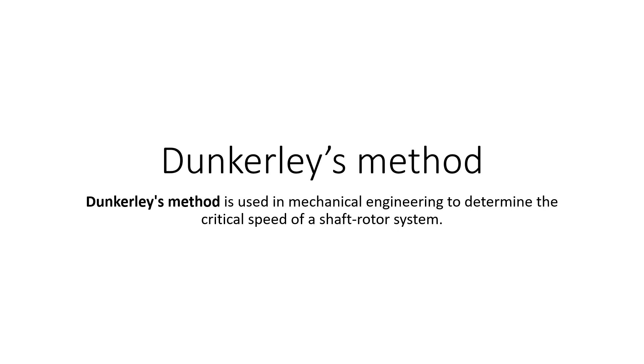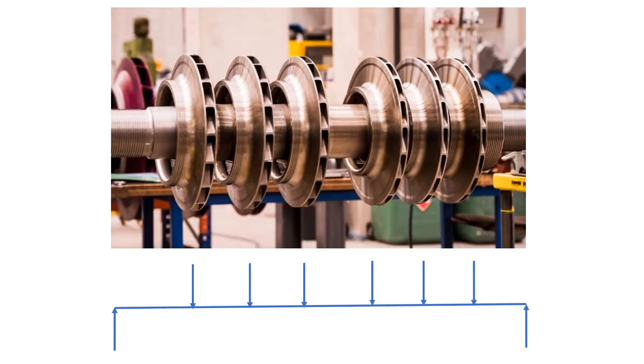In the last video, we discussed the meaning of critical speed. In today's video, we will discuss Dunkerley's method and how it is used to determine the critical speed of a shaft-rotor system.